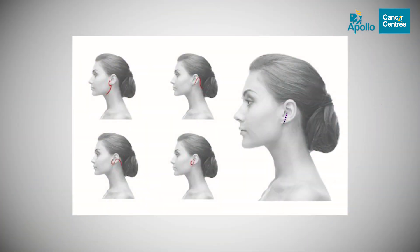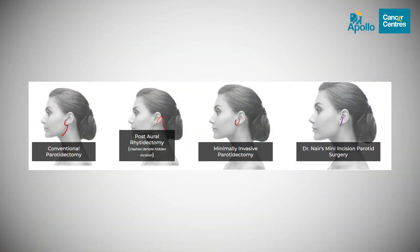We have developed a technique called a mini incision parotidectomy, which is completely hidden. Over the last three to four years, we have been performing all types of parotid lesions using this approach. The mini incision involves a two to three centimeter incision behind the ear, with no incision at all in front of the ear. Through this small hidden incision, we are able to approach the parotid gland, remove the tumor and the gland, and preserve facial function.